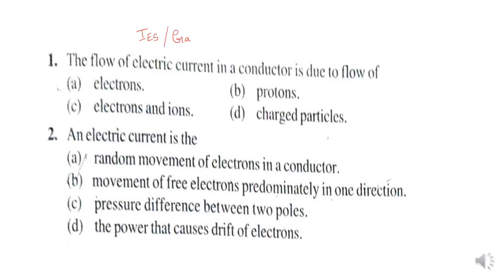So first problem: the flow of electric current in a conductor is due to the flow of electrons only.